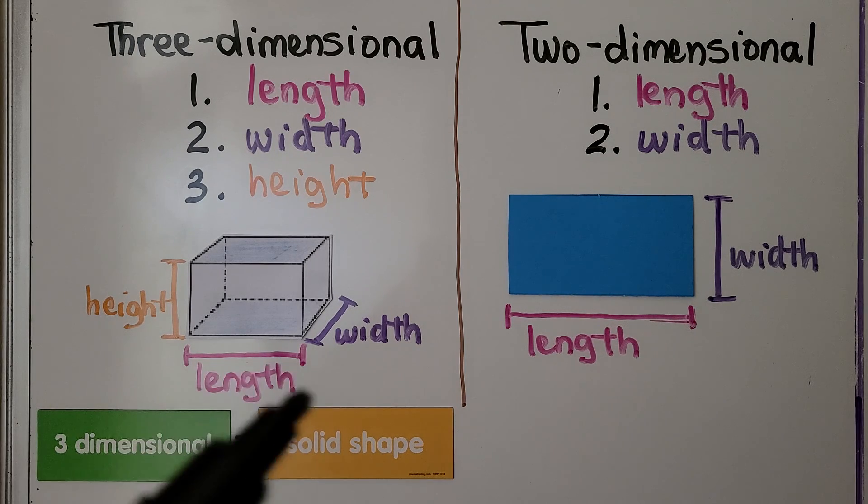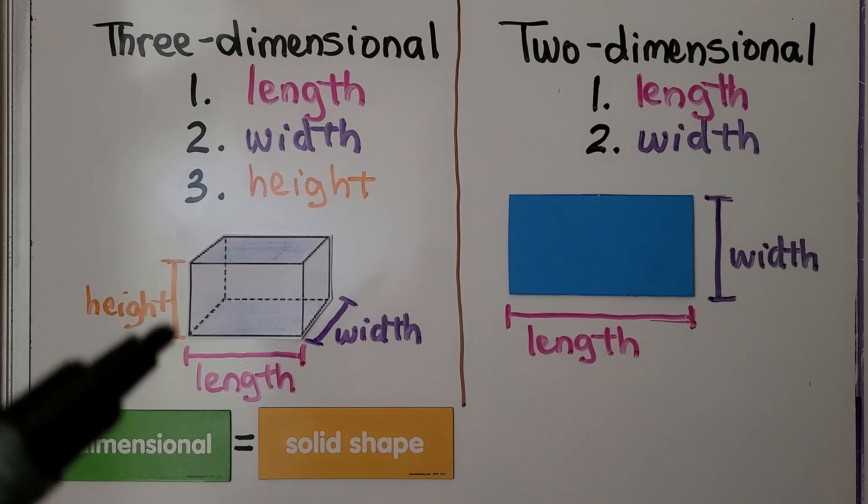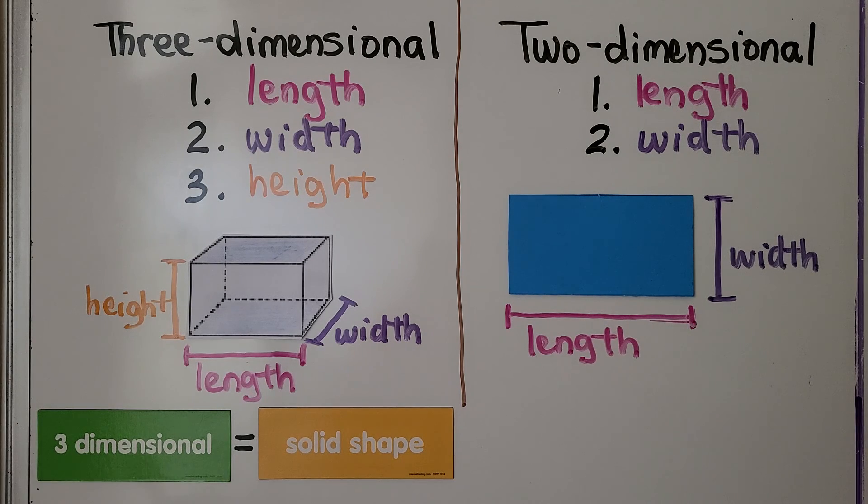We've got a length, a width, and a height. And three-dimensional means solid shape.